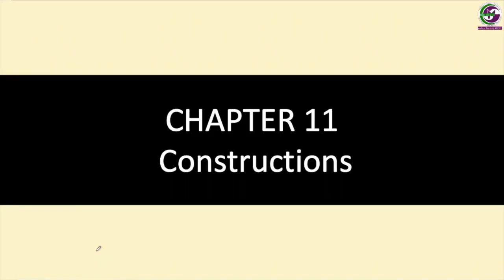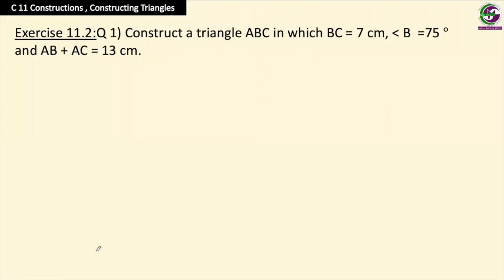Dear grade 9 students, welcome back to the chapter constructions. In this period we will solve a few more questions related to constructions from exercise 11.2. Let's see the first question: construct a triangle ABC in which BC is 7 centimeters, angle B is 75 degrees, and AB plus AC is 13 centimeters.